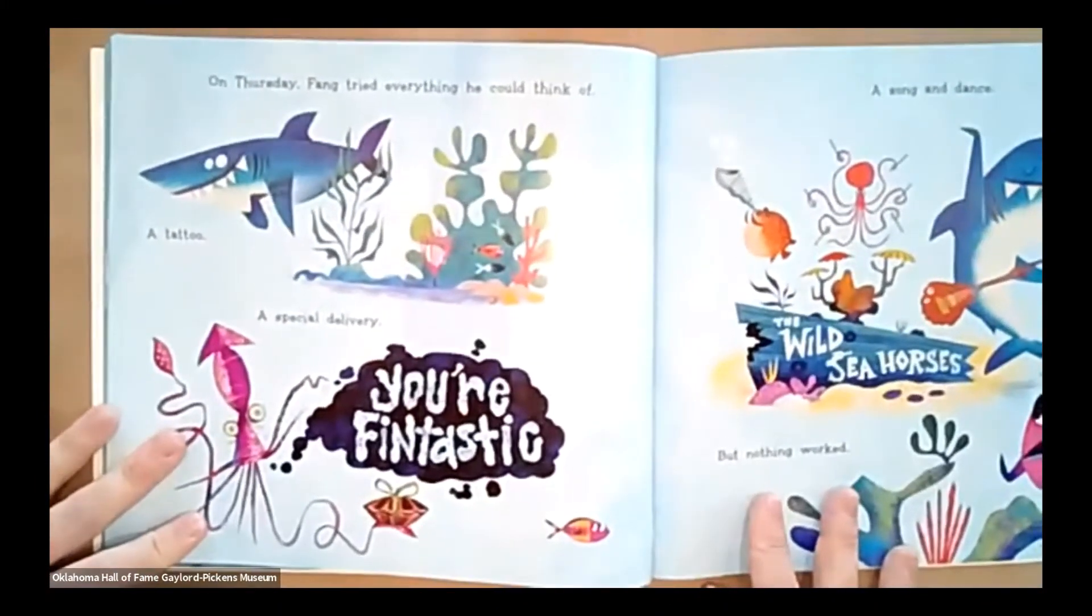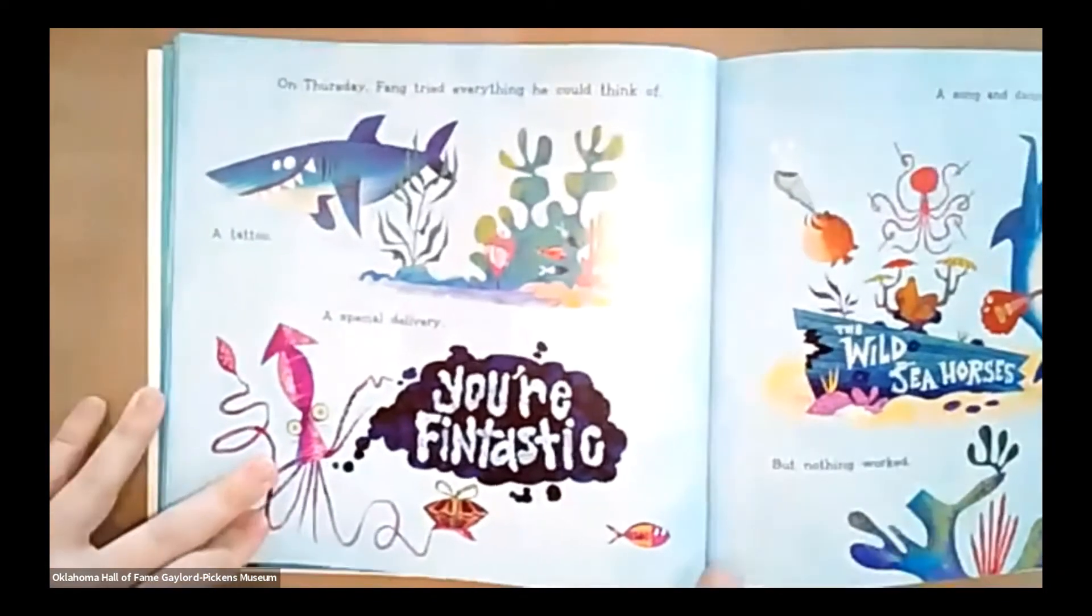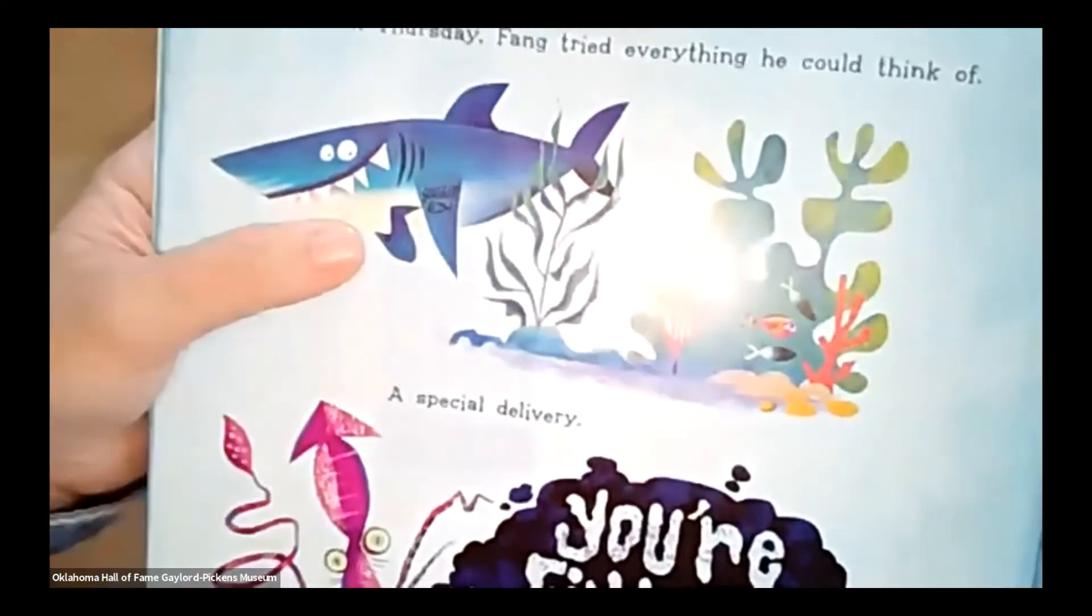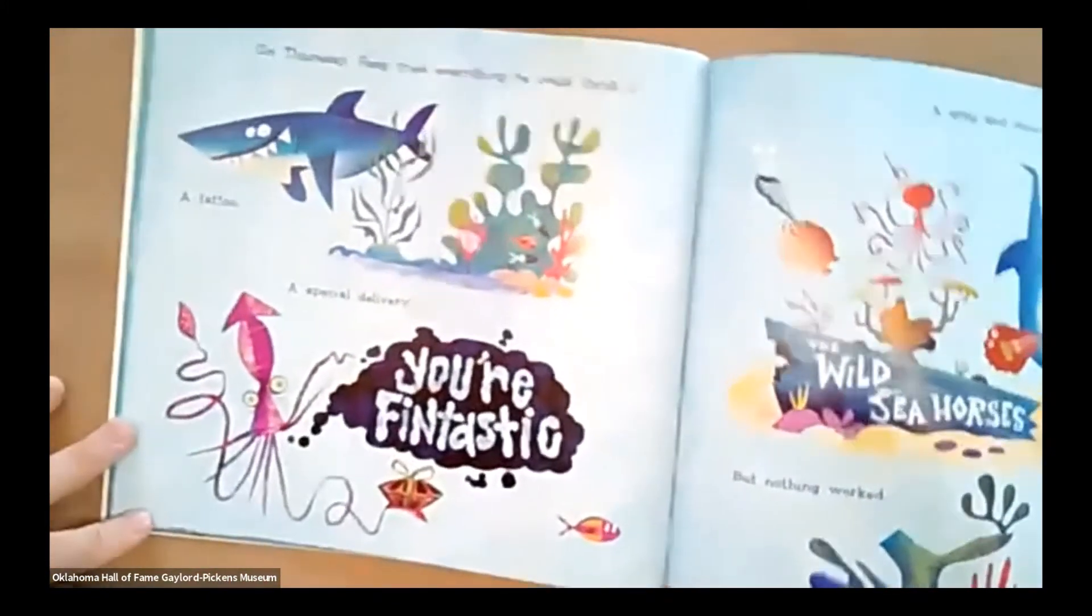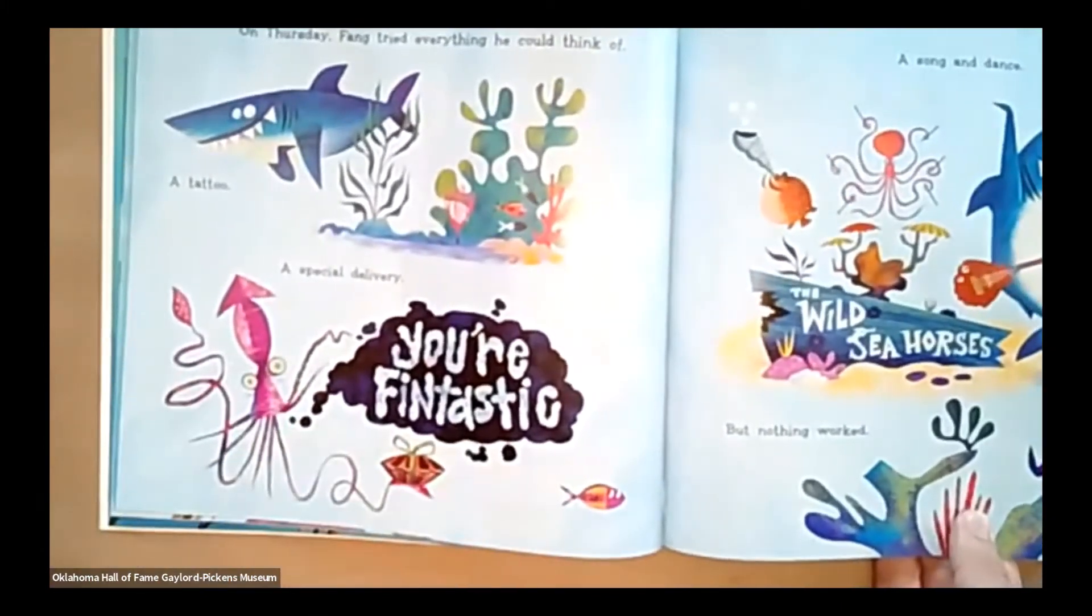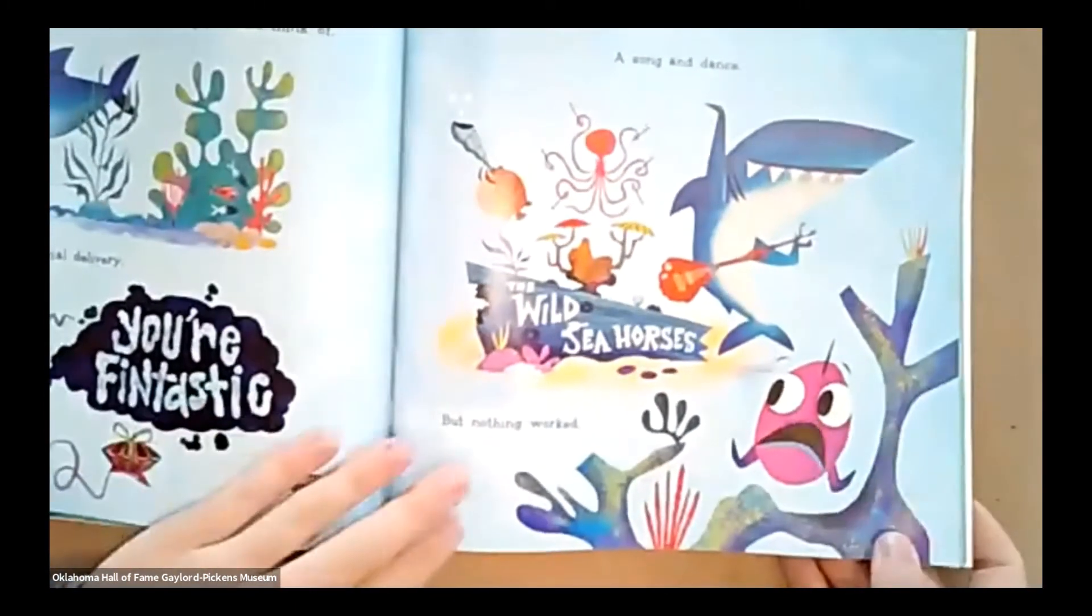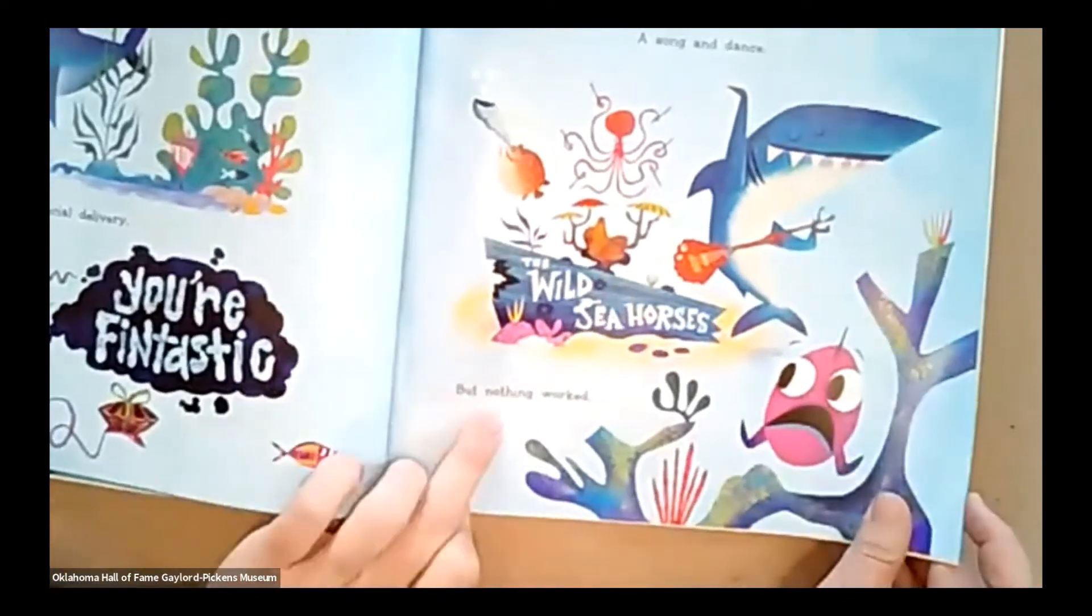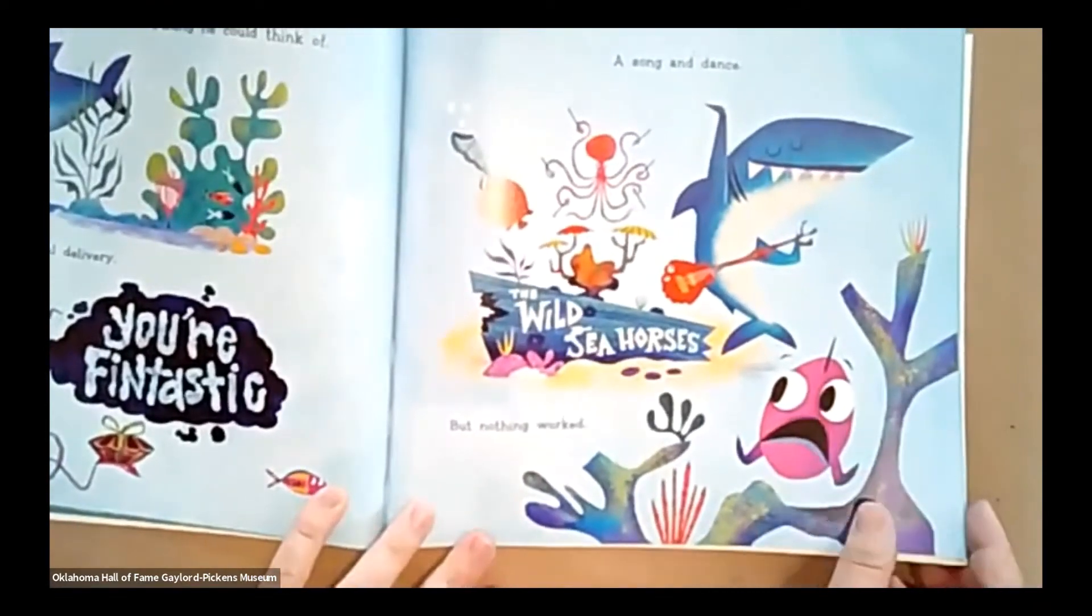On Thursday, Fang tried everything he could think of. A tattoo. If you look real close, he's got a tattoo of little Nugget on his arm, on his fin. He tried a special delivery with the squid spelling out your fin-tastic. He tried a song and dance with his own marine band. But nothing worked, because there's Nugget still looking pretty terrified. Oh, no.